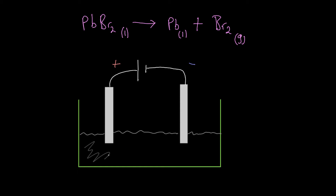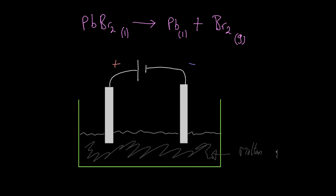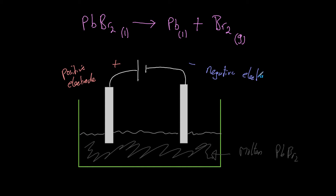Labelling the diagram: all of this liquid is our molten lead bromide. These pieces are called electrodes — we have a positive electrode and a negative electrode. Sometimes you'll see the negative electrode called the cathode and the positive electrode called the anode, but for now we'll just call them positive and negative electrodes.